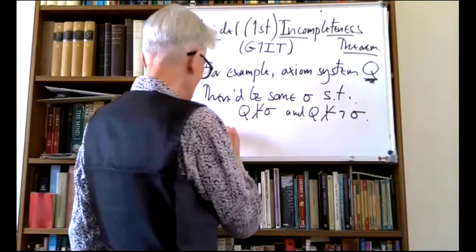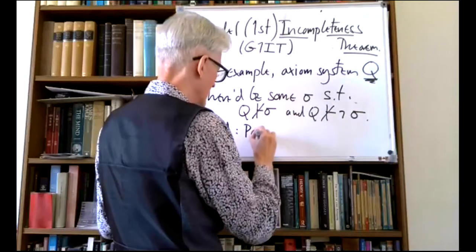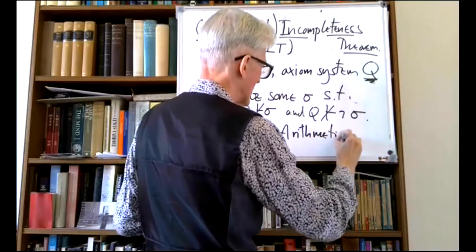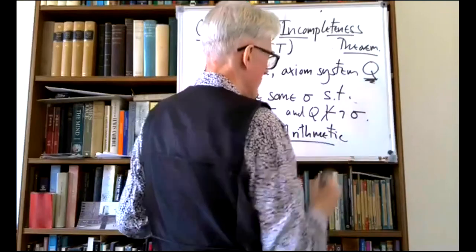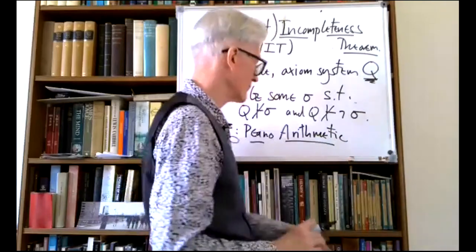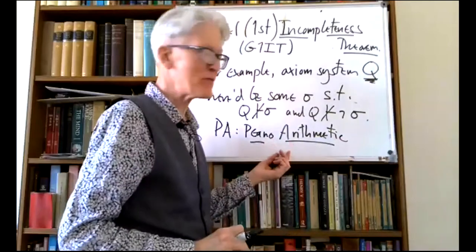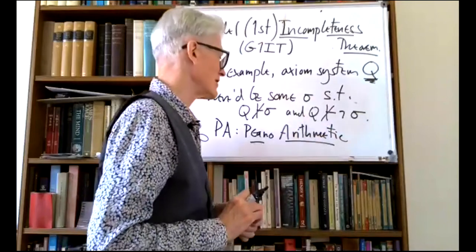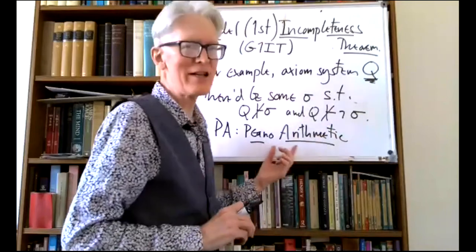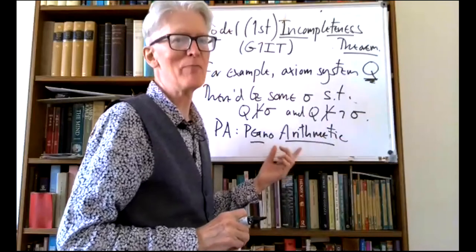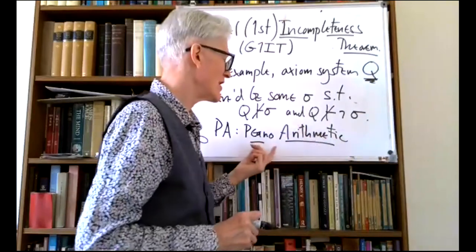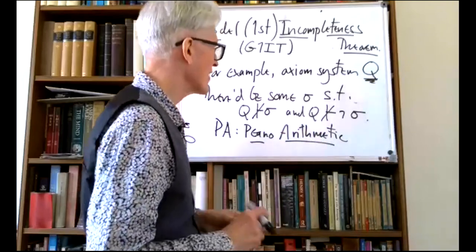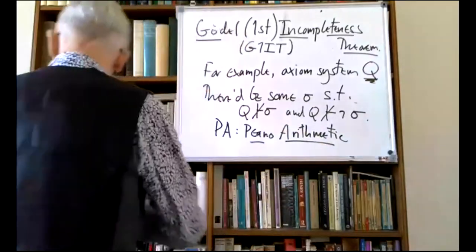At the time, Peano arithmetic — which you'll see as an example in the notes — is an infinite set of axioms, a much stronger system than Q. It's got an induction scheme; you can prove all sorts of things in Peano arithmetic. A lot of current modern number theory uses things that are provable in Peano arithmetic. But what Gödel did was something stronger.